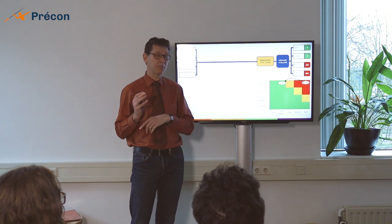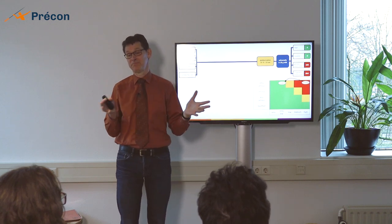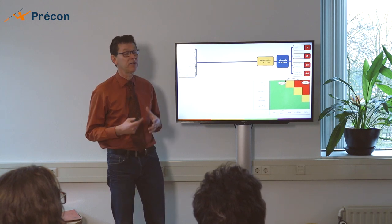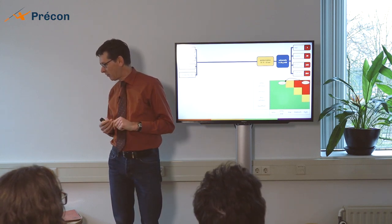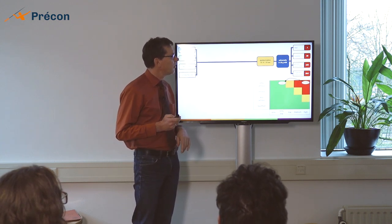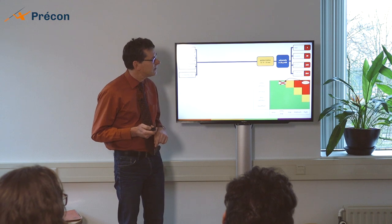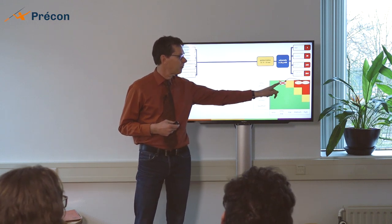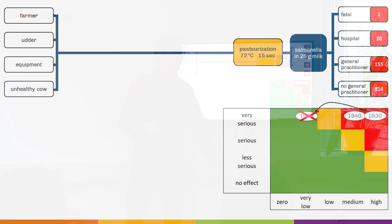We didn't have 8,000 people sick but we had 800. We would not have 1,500 people at the general practitioner but 150. 30 people in hospital and still 1 fatality. That was not what we were aiming for. We were aiming for zeros. So basically we found ourselves not over here but over there. The question is, how come?